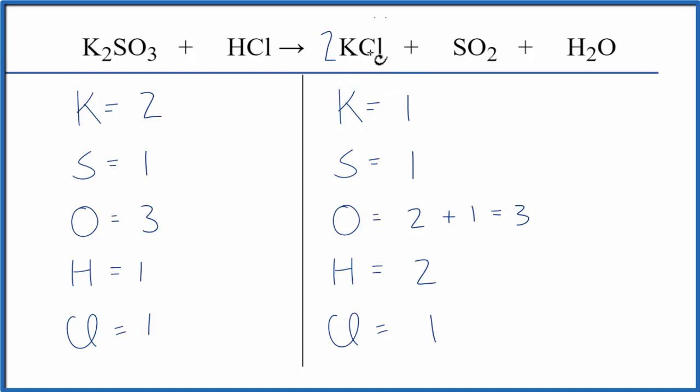The two, it applies to everything, so we have one times two. That gives us two potassiums, those are balanced, but for the Cl, we need to do that as well. So we have one Cl times the two, and that gives us two chlorine atoms.